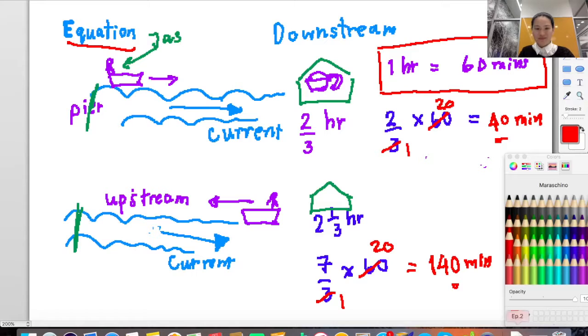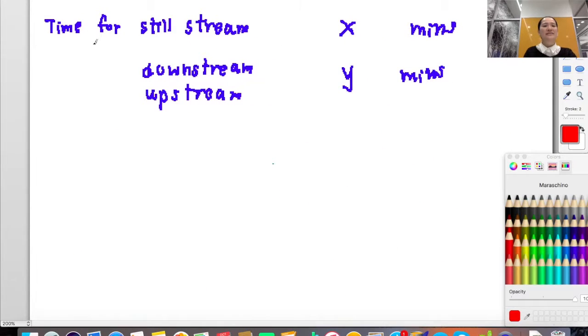Now let's set up the equation. Time for still stream, I give it x. This is what we want to know. And time for downstream or upstream, I give it y. Next, I'm going to set up the equation.